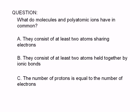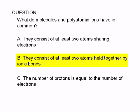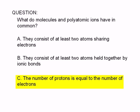What do molecules and polyatomic ions have in common? A. They consist of at least two atoms sharing electrons. B. They consist of at least two atoms held together by ionic bonds. C. The number of protons is equal to the number of electrons.